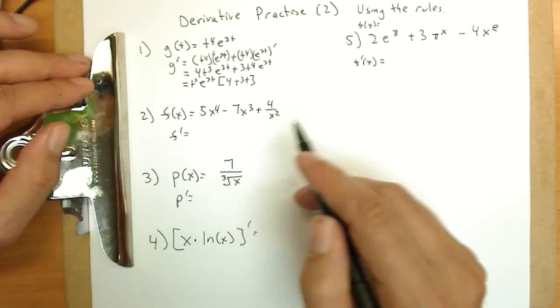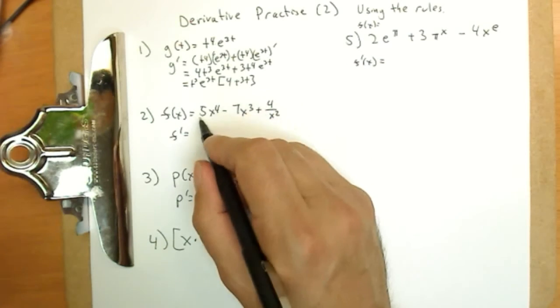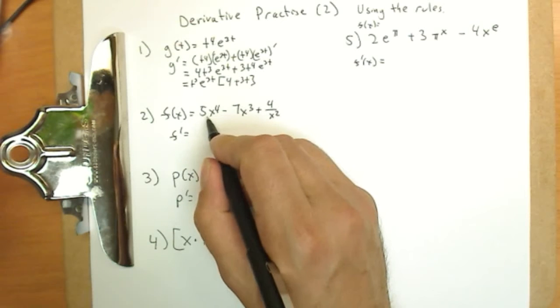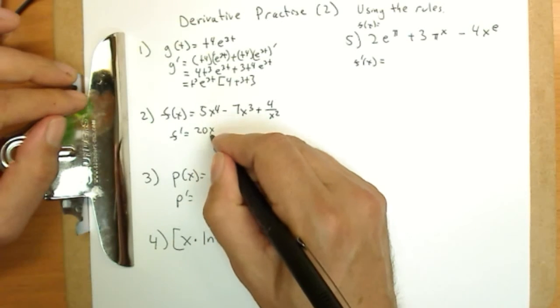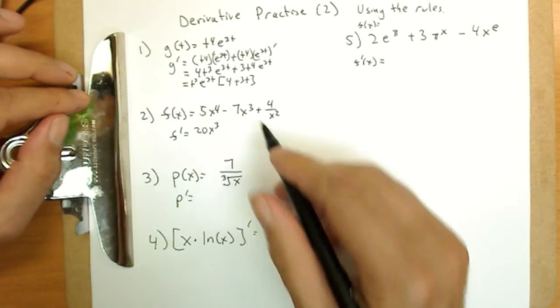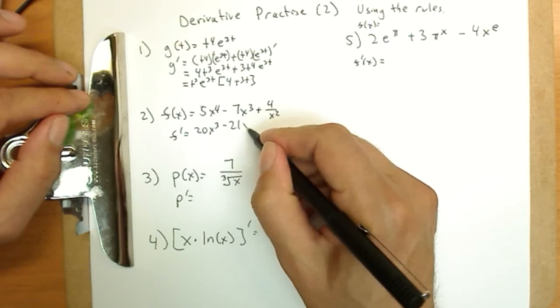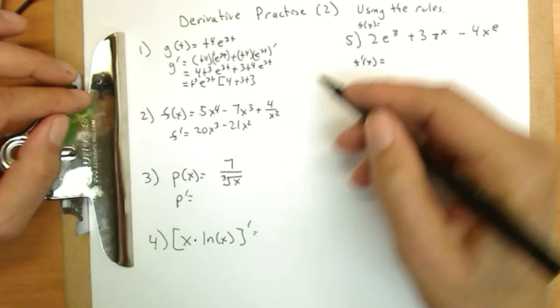Okay, 5x to the fourth and so on. x to the fourth, constant times a function, the constant comes through. The four comes out in front, so we get 20x cubed, subtracting one from the power, minus 21x squared.